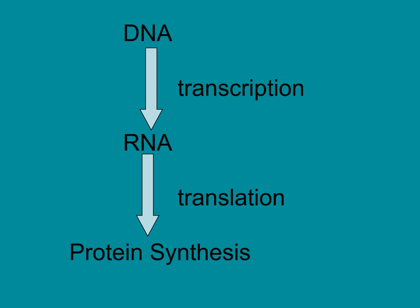Transcription means you're just copying information from one source to another. Translation means converting from one language to another — like going from DNA's base sequence language to the amino acid language of proteins. The genetic code is the set of rules that allows translation from the RNA base sequence into amino acids and proteins. This genetic code is universal — it's the same whether you're talking about human cells, bacterial cells, or plant cells.